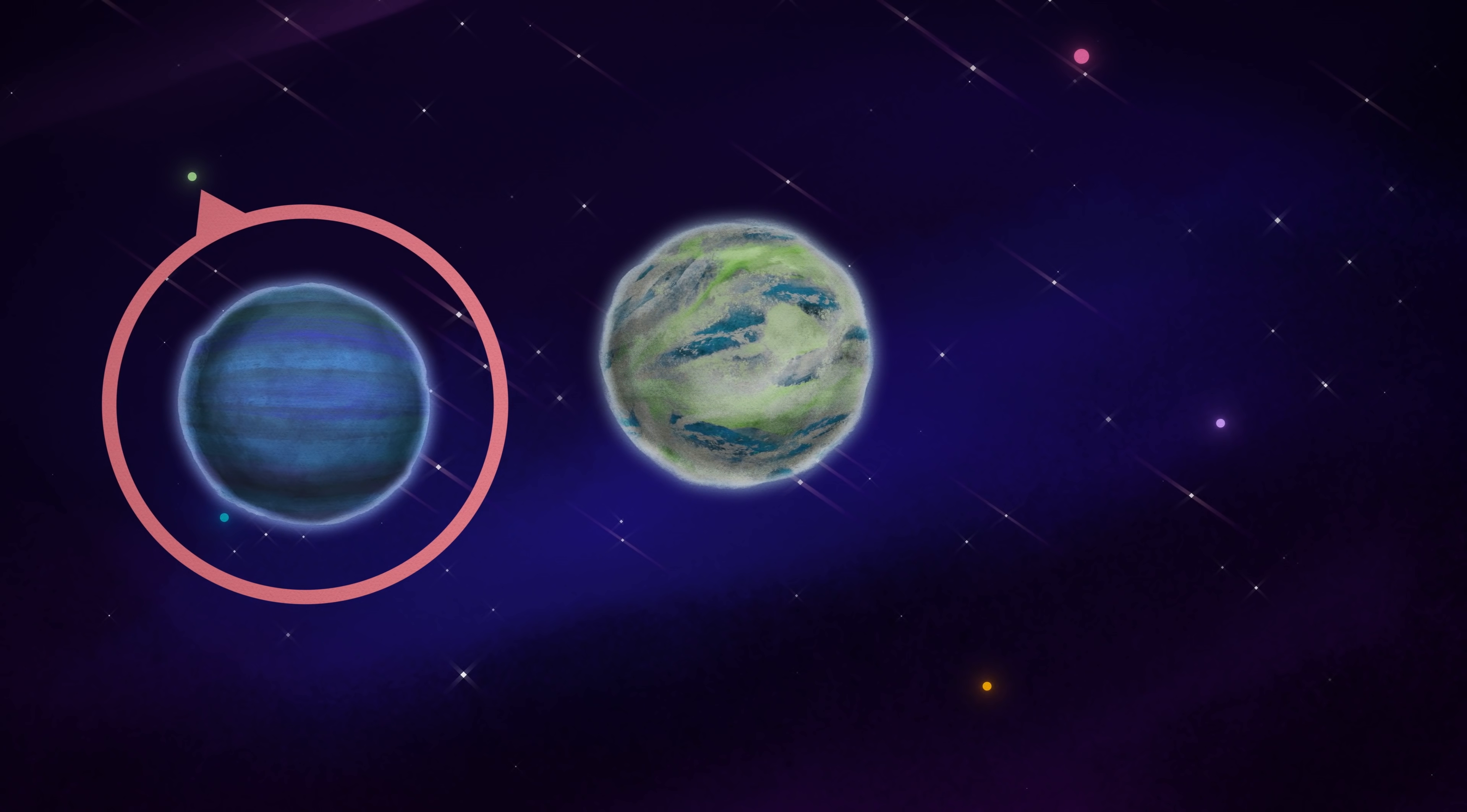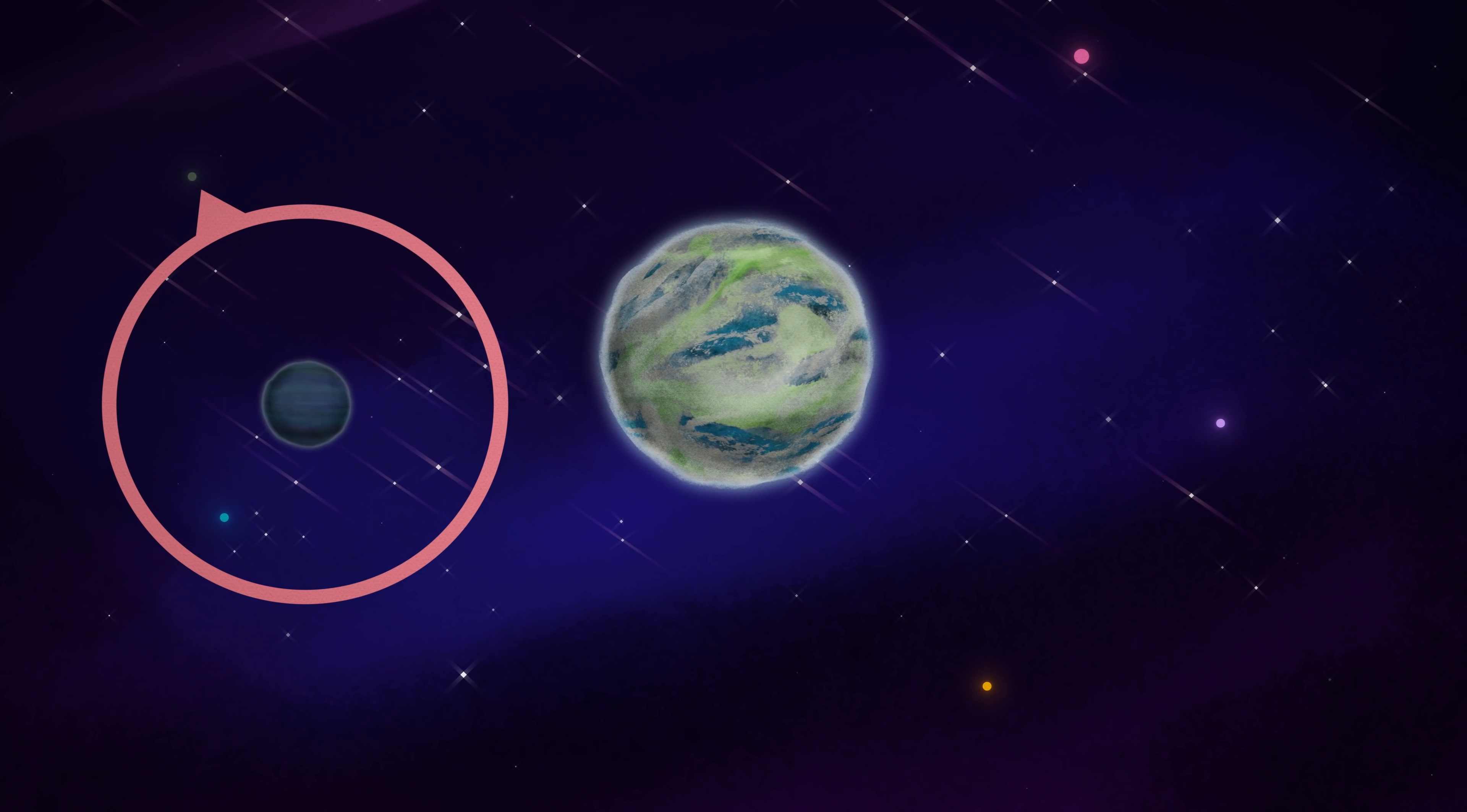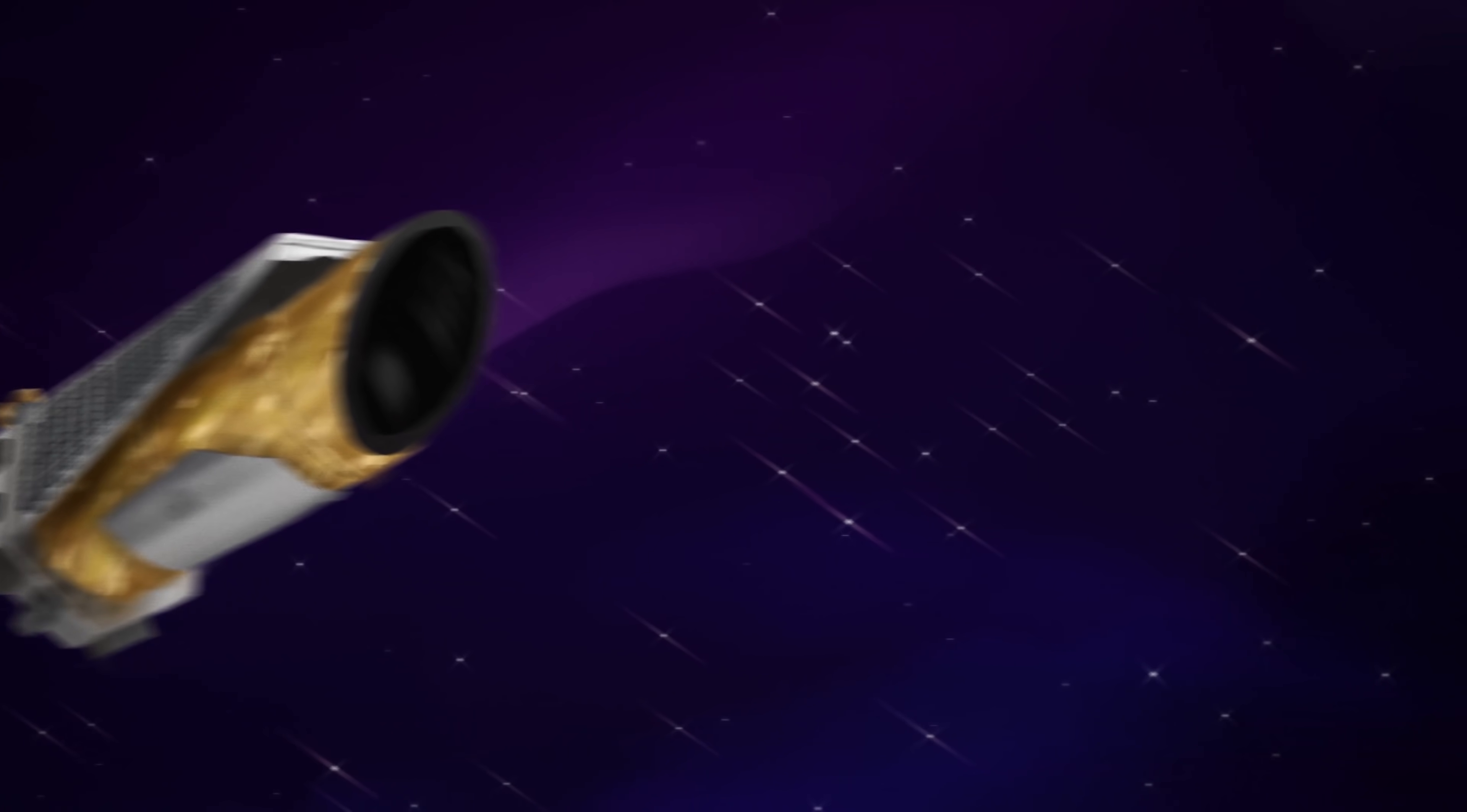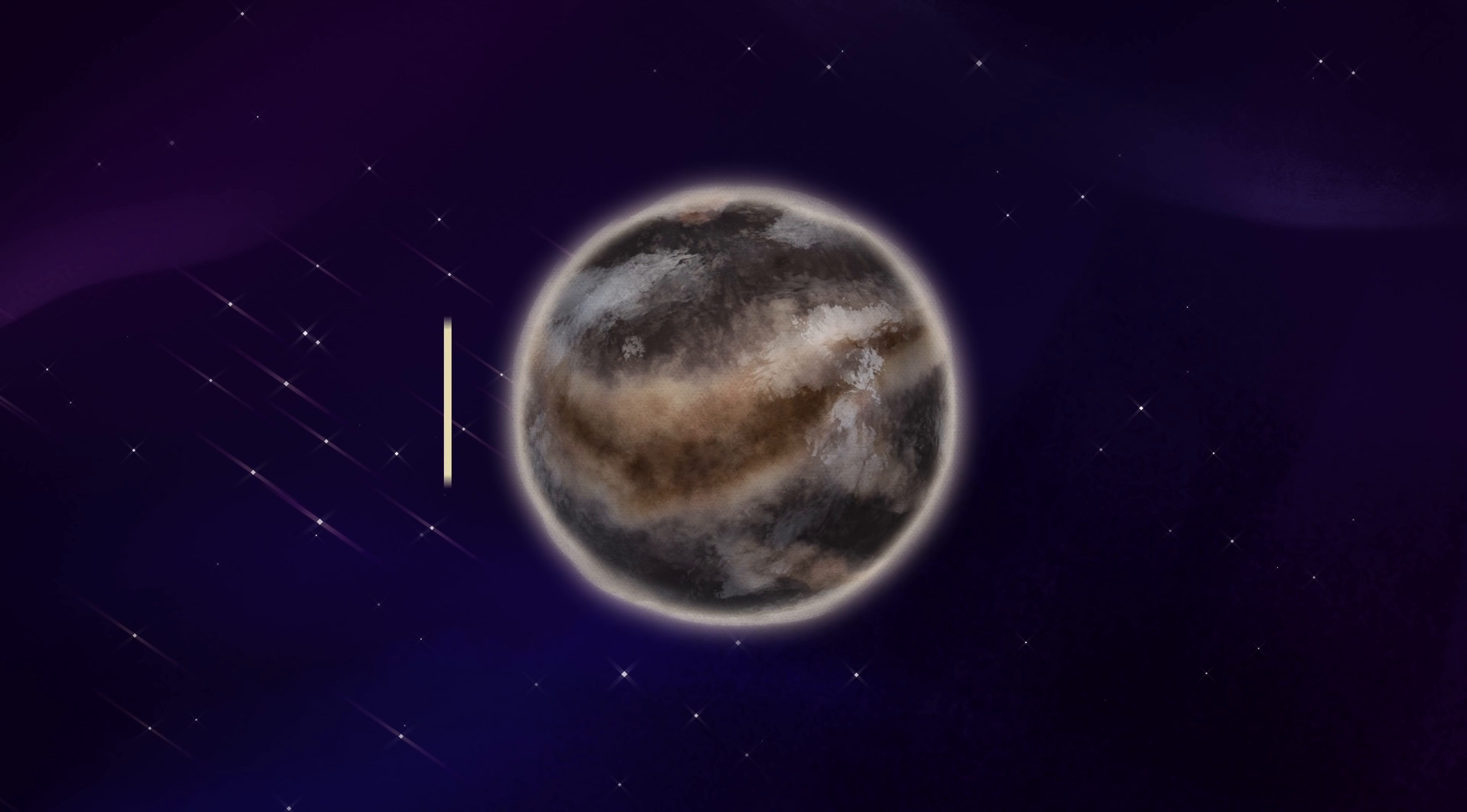Exoplanets are super hard to see, both because they're so far away and because they're so much fainter than their stars. But we've worked out some clever methods to detect them and even take pictures of some. So, what can we observe?